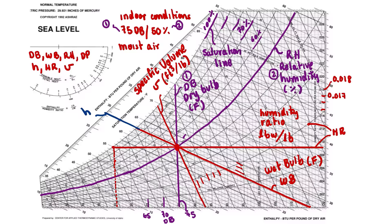Next is specific enthalpy, shown in blue. Specific enthalpy represents the heat content and is measured in BTUs per pound. Notice that everything divided by pound is called 'specific' — specific enthalpy, specific volume, and so on.